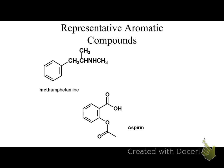Methamphetamine is a popular example and is closely related to adrenaline — also known as epinephrine. When people take epinephrine or norepinephrine for emergencies like asthma, it's just adrenaline. Aspirin also has an aromatic benzene ring in it. Many fragrances have benzene rings in them, though most things that are aromatic don't actually smell good.